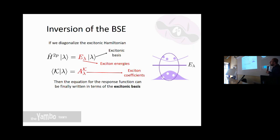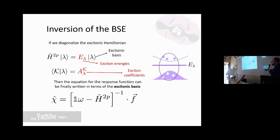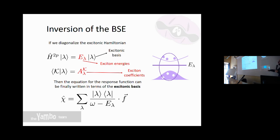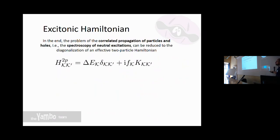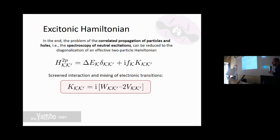All results can now be obtained by diagonalizing this two-particle Hamiltonian. The eigenvalues are the exciton energies and the eigenvectors, once projected onto single-particle transitions, give the exciton coefficients. These are exactly the quantities you need in the formula for optical absorption to recover excitonic effects. In the excitonic basis where this Hamiltonian is diagonal, the response function is also diagonal, and using these coefficients to do the basis change lets you recover the full response function.